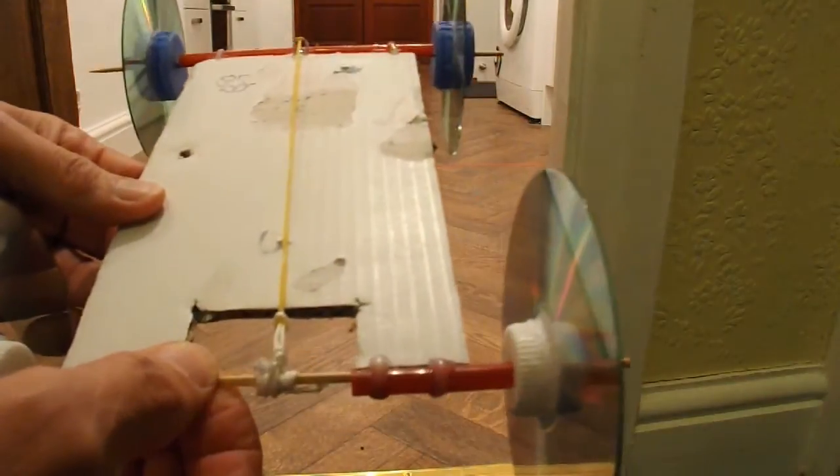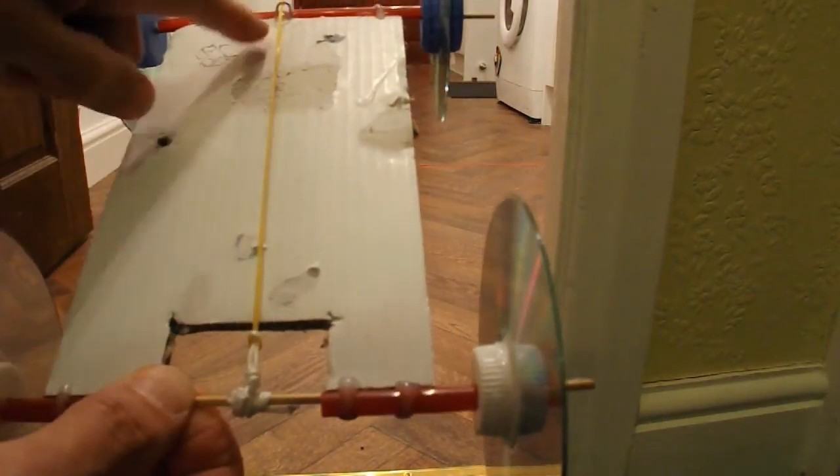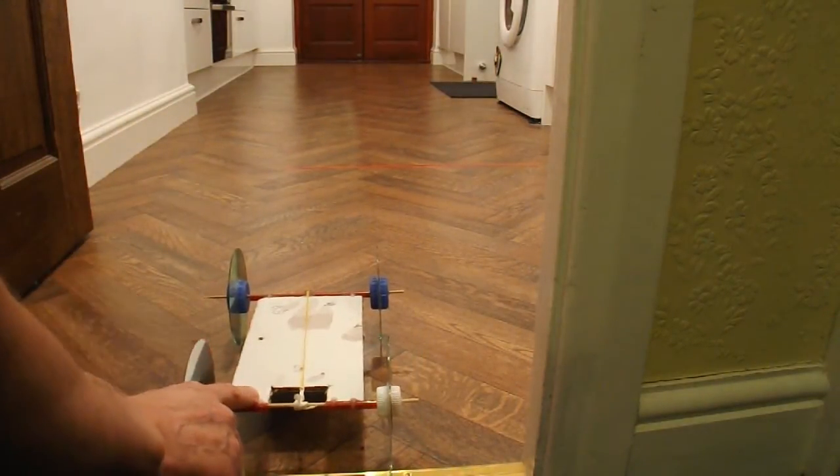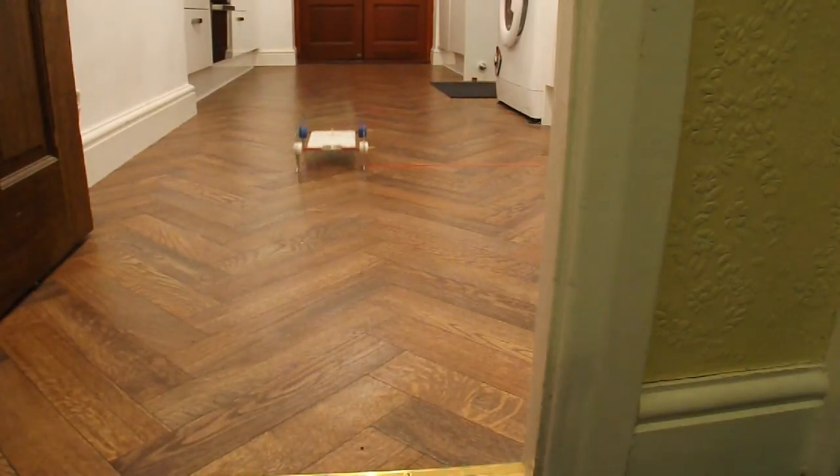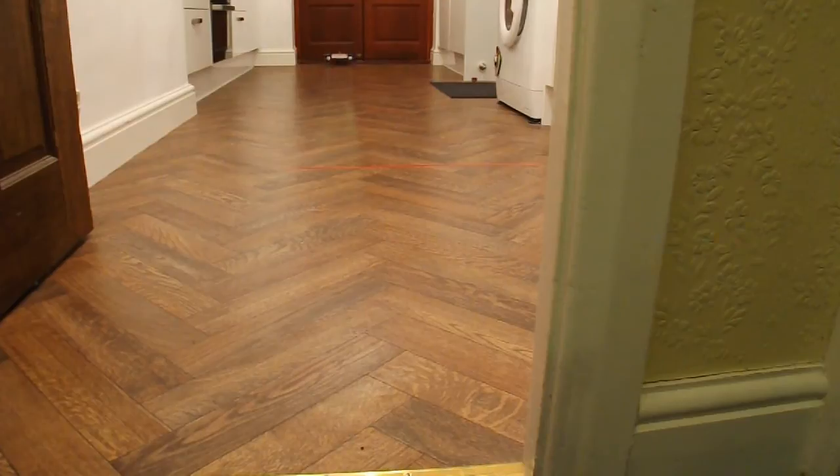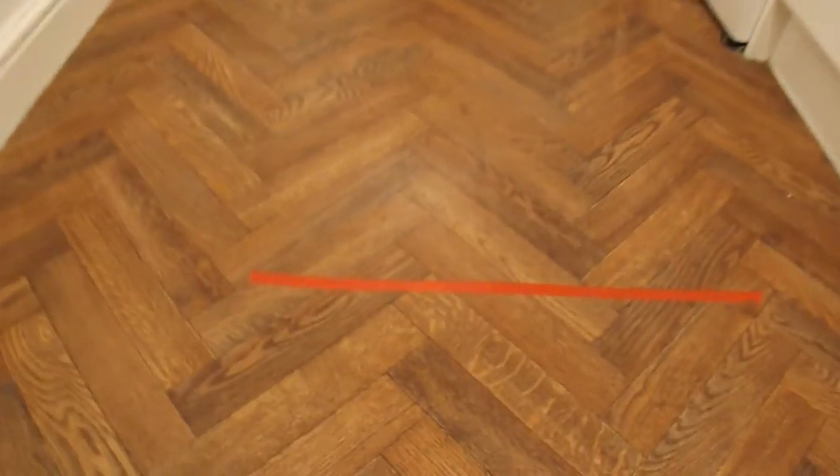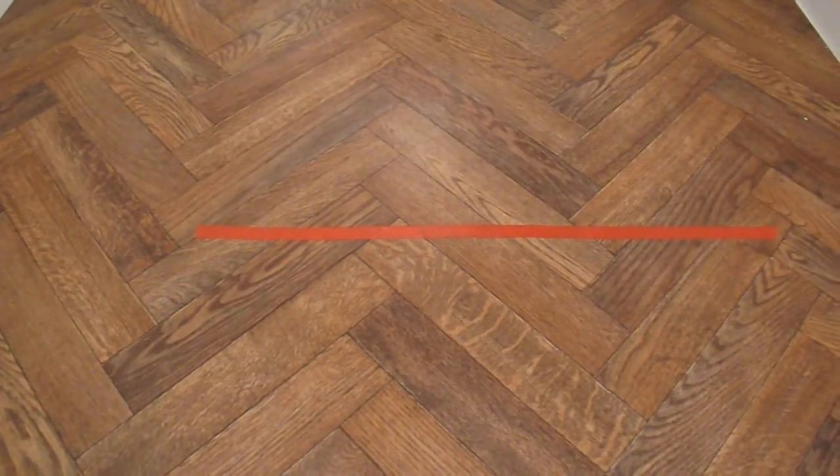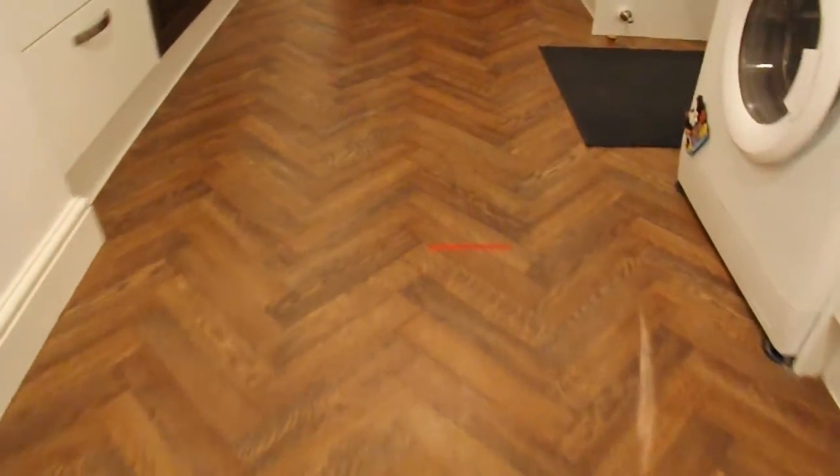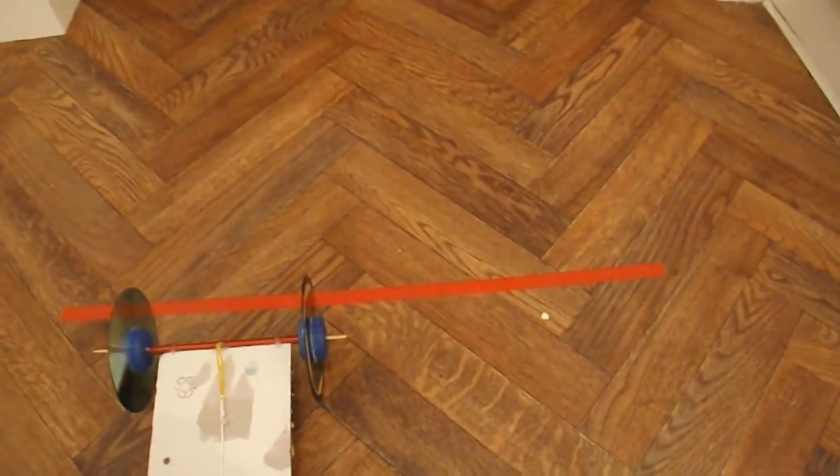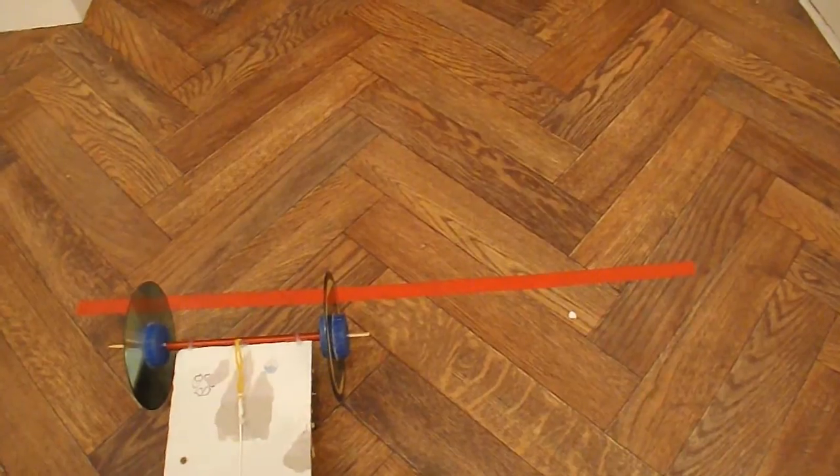So there we are, that's the string wrapped round the back axle and the rubber band stretched. And that's the five metres of my kitchen. If I just walk up there, that red line I use for testing other cars. That red line is a metre away from the first red line. And that red line is three metres away from the first red line.